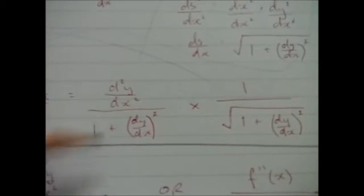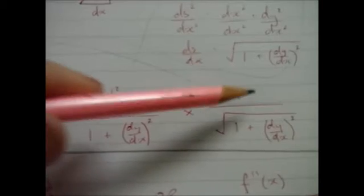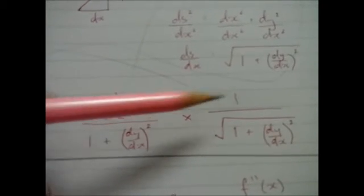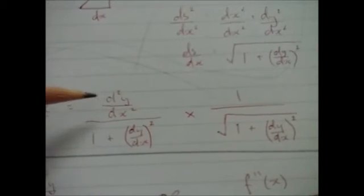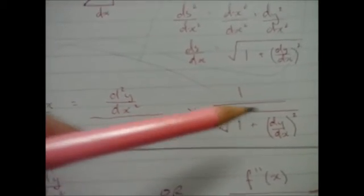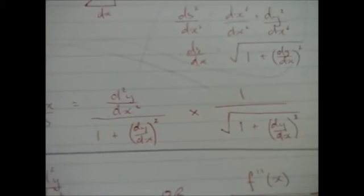So I've got K equals dθ by ds. Use the chain rule. I've just worked out them two bits. This is my dθ by dx, this is my dx by ds. I just multiply them together. And the tops just become this. And the bottom, I've got a load of stuff multiplied by the square root of a load of stuff. But that's going to be a load of stuff to the power one and a half, and that's exactly what I get here.